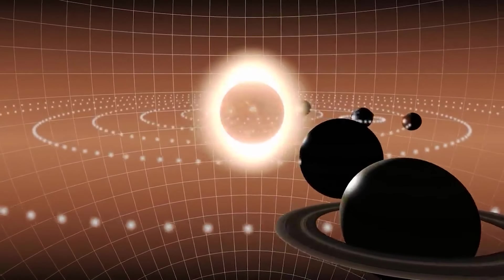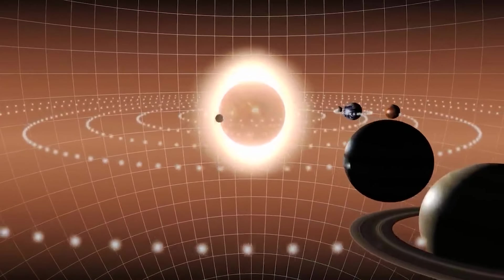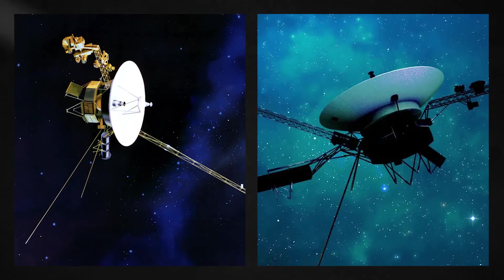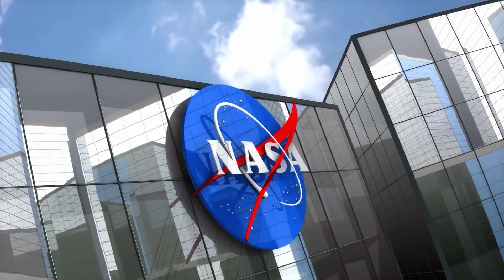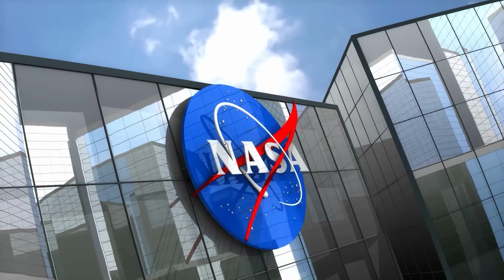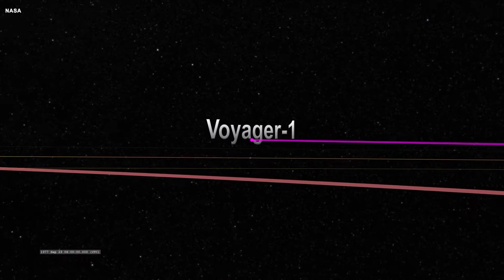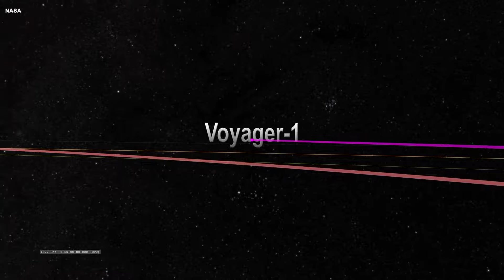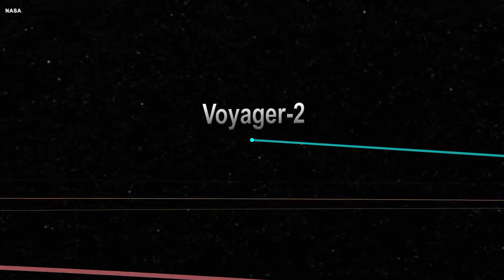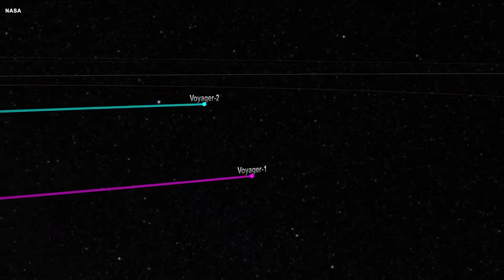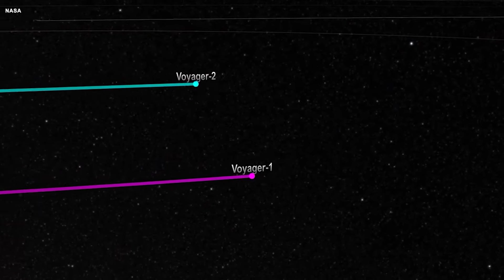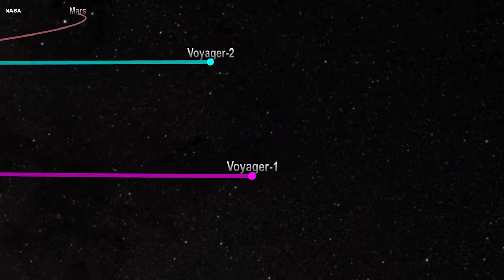This distance is why many space agencies develop and launch spacecraft into deep space for observation and exploration. Two of the most iconic spacecraft launched by any space agency are the Voyager 1 and Voyager 2, which were deployed by NASA as part of the Voyager program in the late 1970s to explore the outer solar system. Voyager 1 was launched on September 5th, 1977, while Voyager 2 was launched on August 20th, 1977. Despite its name, Voyager 2 was launched before Voyager 1 due to its trajectory to explore multiple planets.